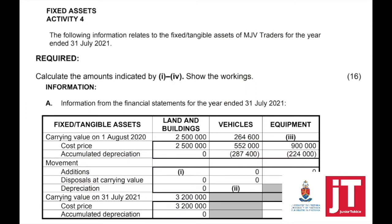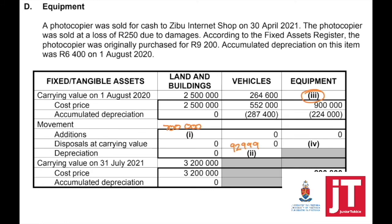The third question requires us to calculate the carrying value on the 1st of August 2020 for equipment. This is an easy mark to get. How do we calculate the carrying value? We always take the cost minus the accumulated depreciation, which equals the carrying value. So my carrying value for equipment at the beginning is 676,000.